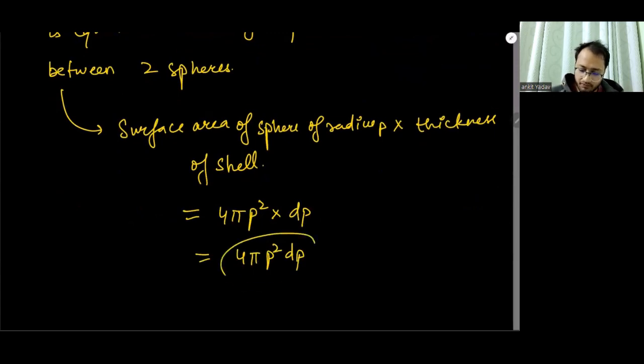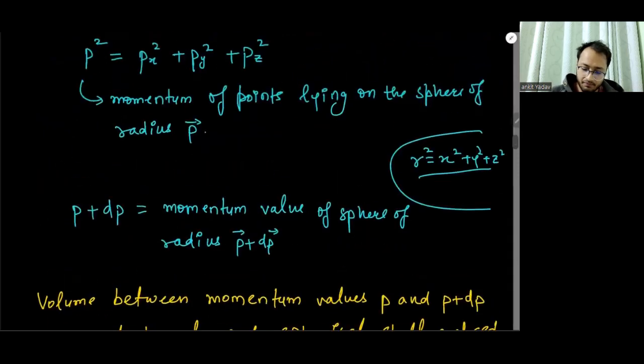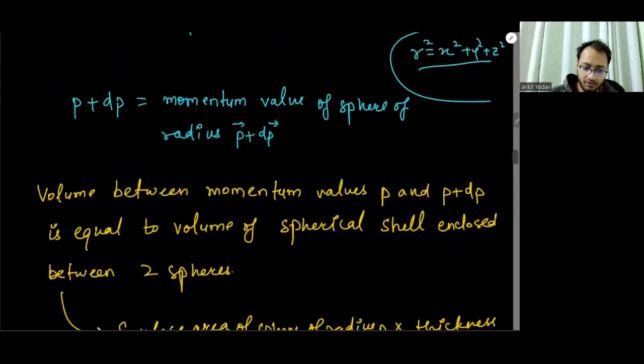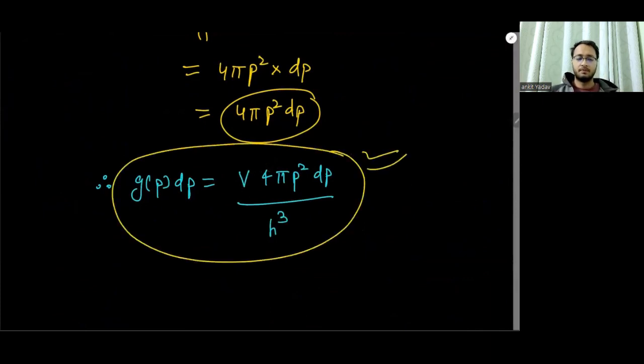This particular value we are going to put in this equation. Therefore, we will get gp dp is equal to V into 4π p squared dp upon h cube. This is your division of phase space into cells derivation. It is pretty simple, not difficult. The question can come like, first define position space and momentum space, and then define division of phase space into the momentum interval. This is how you can do it.